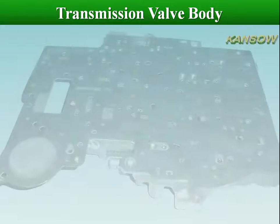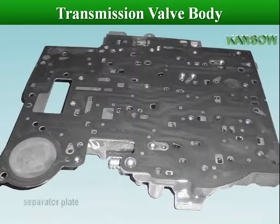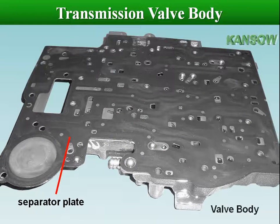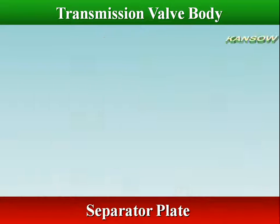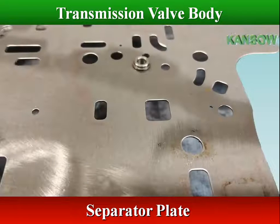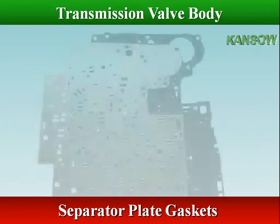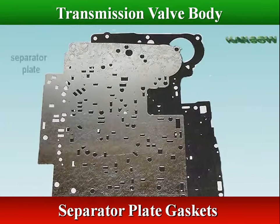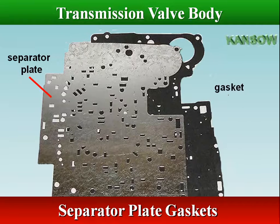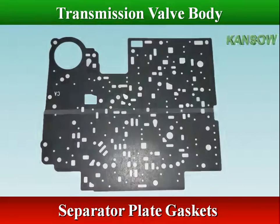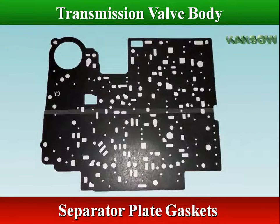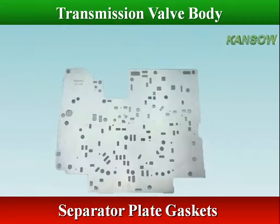When assembled, the separator plate contains holes or orifices that form a seat for ball check valves. The separator plate is accompanied by a gasket that forms a seal when assembling and fastening the valve body to the transmission case.